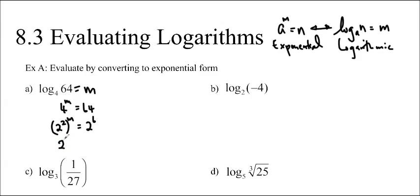So then we get 2 to the 2m is equal to 2 to the 6. If you have the same base, then you can just let the exponents be equal. So 2m is equal to 6. So m is equal to 3.